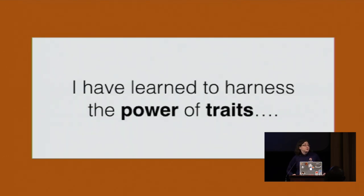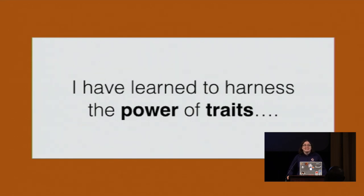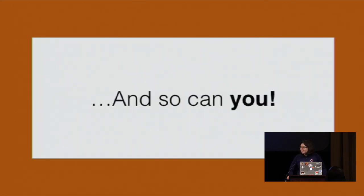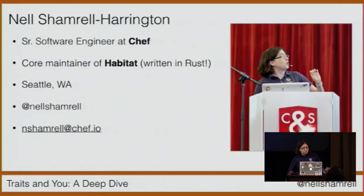I have good news for you today, and that is that despite them being a bit hard to get my head around at first, I have learned to harness the power of traits and so can you. Before we dive into traits, let's briefly cover who I am. I'm Nell Shamrell-Harrington. I'm a core maintainer of Habitat, which is written in Rust. I'm a senior engineer at Chef.